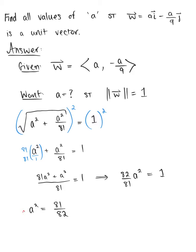Now we can go ahead, now that a is isolated, we'll take the square root of both sides, giving us a is equal to plus or minus 9 by the square root of 82.